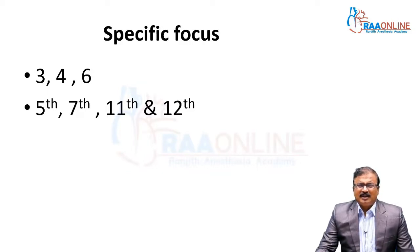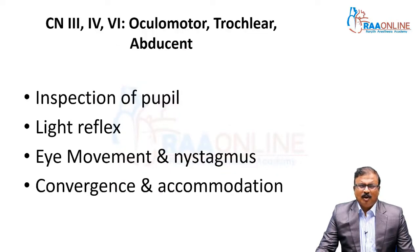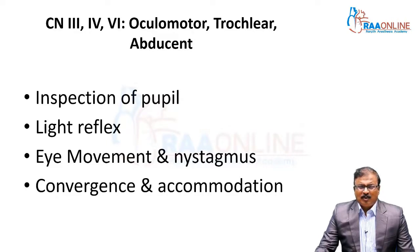Sometimes the examination becomes complicated. How do you examine the third, fourth, and sixth nerve? It is easy, it is very simple. You have to check for the pupil, light reflex, eye movement and nystagmus, convergence and accommodation.